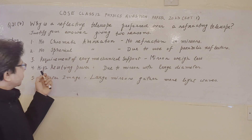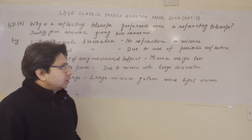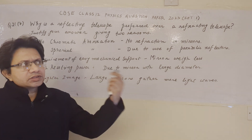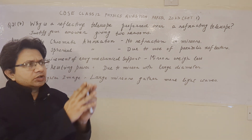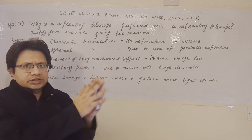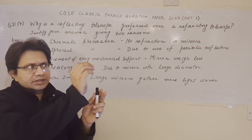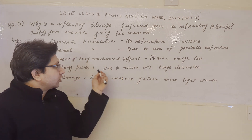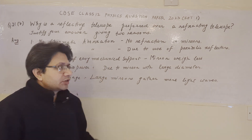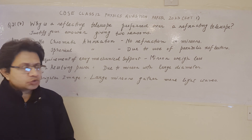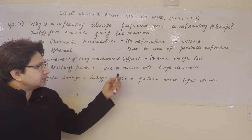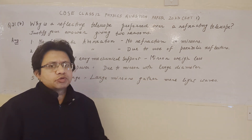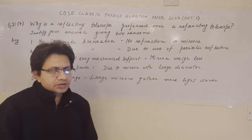The fourth reason is high resolving power. Resolving power means you can clearly differentiate two very distant nearby objects. The resolving power is greater in the case of the reflecting telescope due to the large diameter mirror that can be achieved with mirrors.